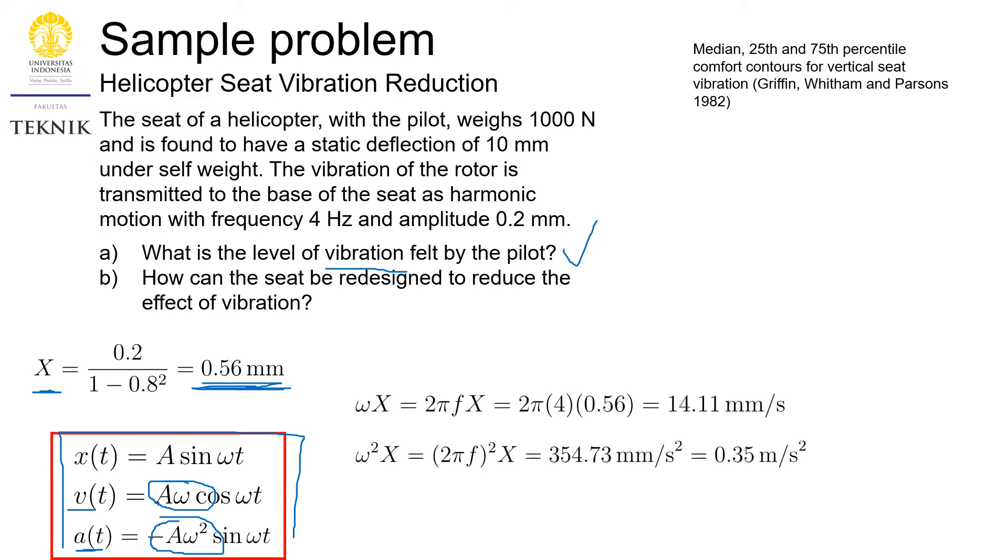You know, because given a random signal, random vibration, we can do the derivative to find the v(t) and a(t). And this will be our amplitude for velocity, and this is the amplitude for acceleration. So with that in mind, we can operate omega and X to find the amplitude of velocity. We plug it in and we get this 14.11 millimeters per second, as well as the amplitude for acceleration, omega squared X, and the result is 0.35 meters per second squared.